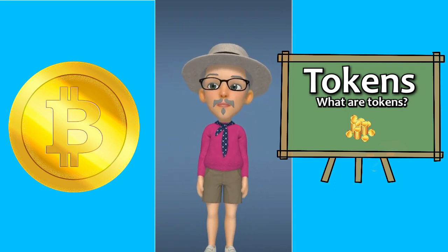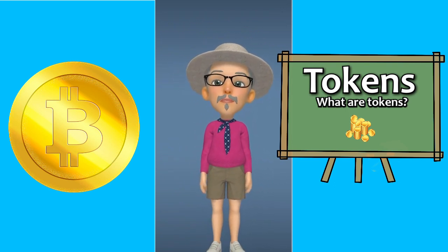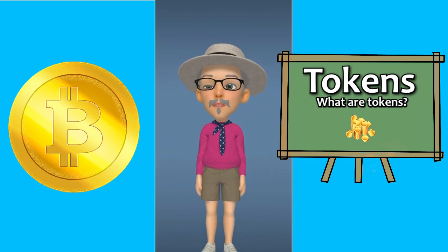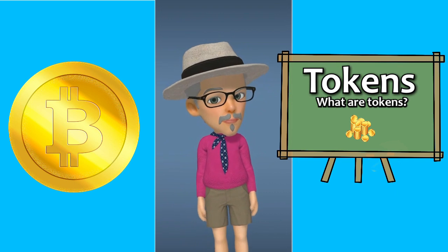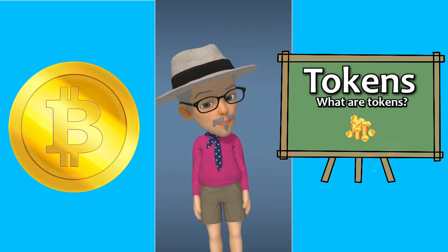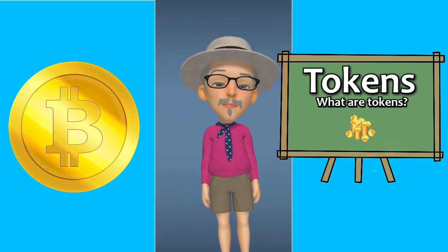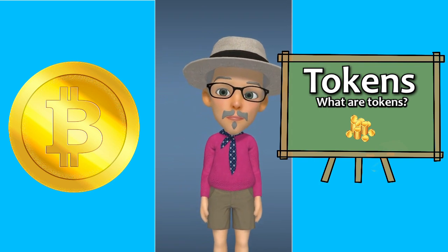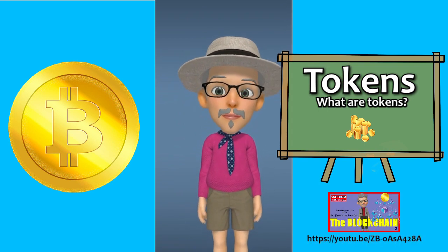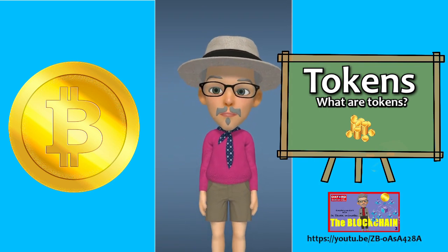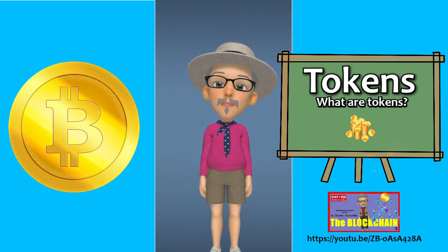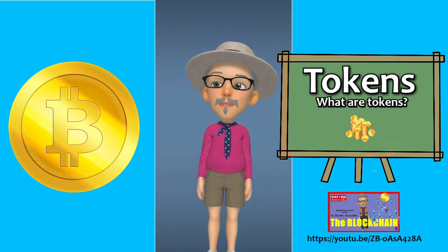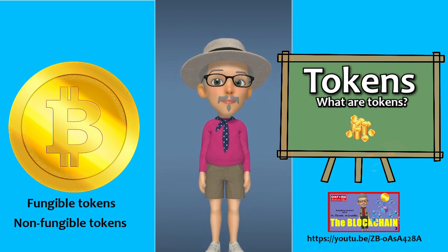A token is a term used to characterize a cryptocurrency or a digital asset registered on a third-party blockchain. We talked about blockchain in a previous video — if you don't know what a blockchain is, I suggest you watch that video first. There are basically two types of tokens: fungible tokens and non-fungible tokens.